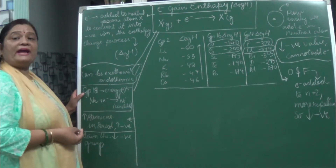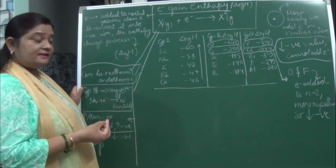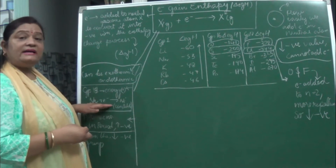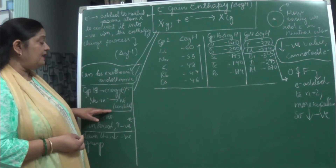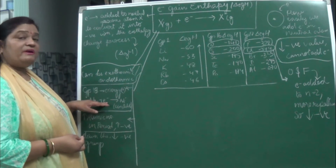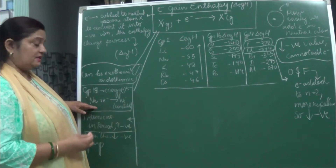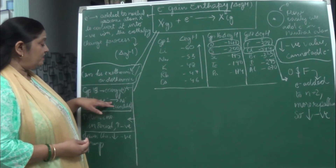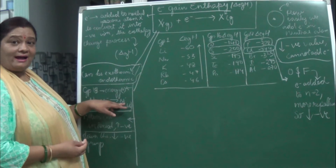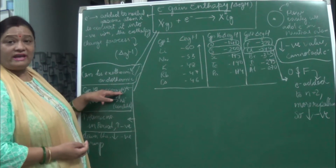For example, in group 18 elements like neon, there is a stable configuration. If we try to add an electron, that stability is disturbed and it becomes unstable. In the case of neon plus electron, a tremendous amount of energy is required to accept the electron because neon is already stable in nature. When it accepts that electron, it becomes an unstable negative neon ion.